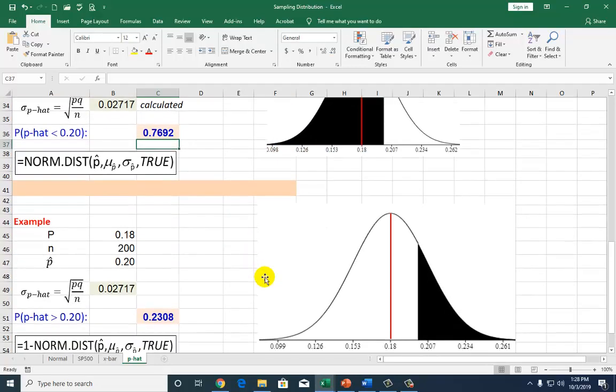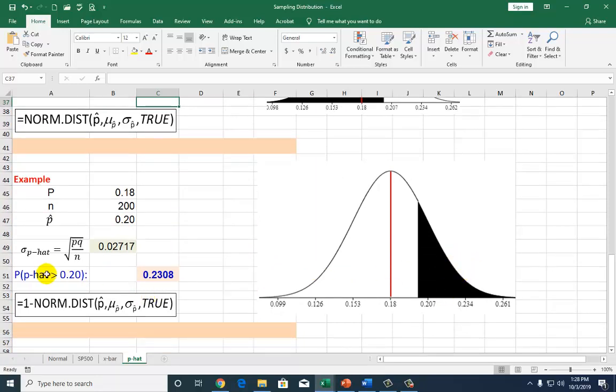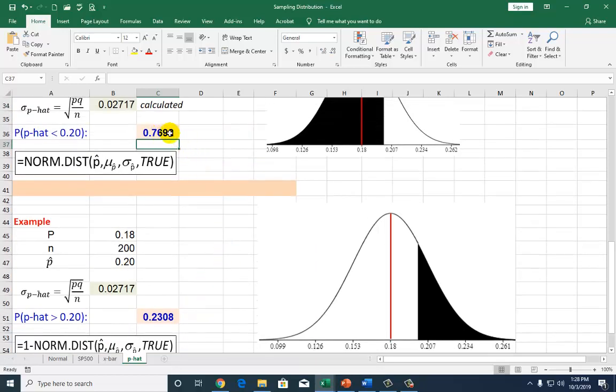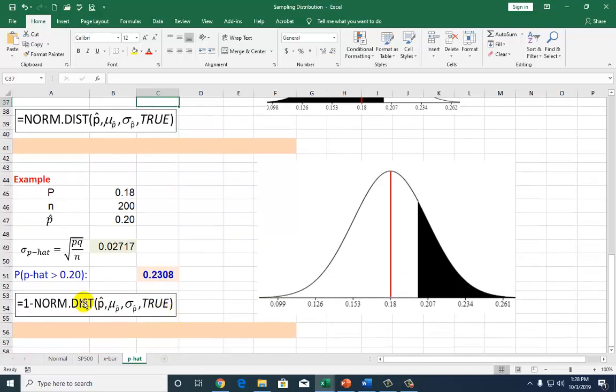If you want to calculate the residual region, which would be the probability that p hat is greater than 0.2, you can simply subtract this value from 1, or you can directly calculate it. But bear in mind that the Excel function, this function right here, gives you cumulative probability from the left to a certain point over here. So it's going to give you from here to here. It doesn't give you beyond areas that are beyond. So to do so, we're going to execute 1 minus the cumulative probability.